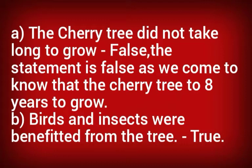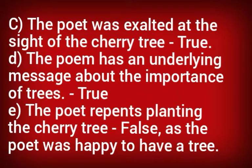Statement B: birds and insects were benefited from the tree — that is true. In the last stanza we can see the bees drinking in ecstasy the juice from the tree. Statement C: the poet was exalted at the sight of the cherry tree — true; he was happy to finally see the grown cherry tree. Statement D: the poem has an underlying message about the importance of trees — also true, because he always wanted to have a tree for himself, and we should all have one particular tree for ourselves.